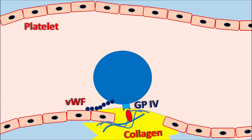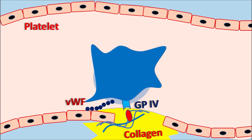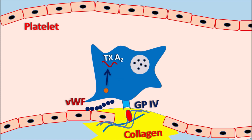Then these platelets undergo a morphological change, whereby they change their shape into a pseudopodal shape. After the shape change, platelets express more mediators like ADP and 5-HT, and they also synthesize mediators from arachidonic acid. One of the important mediators is thromboxane A2. In this way, these chemical mediators are more expressed within the platelets.